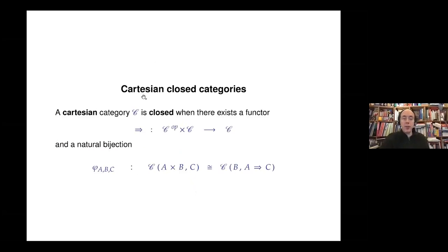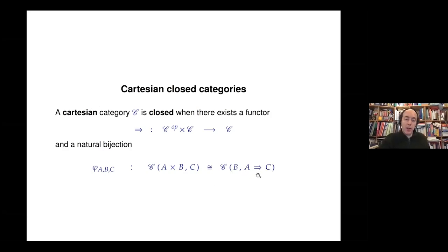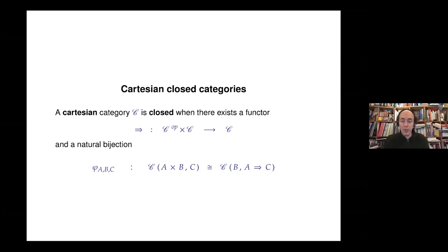This category should be cartesian — it should have a cartesian product — and it should be closed in the sense that we have a family of adjunctions between the functor A-times and the functor A-implies. This means there is a natural bijection between the set of maps from A×B to C and the set of maps from B to A⟹C. A basic example is the category of sets and functions, but there are many other examples — we spend a lot of time constructing cartesian closed categories of many shapes.